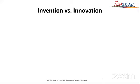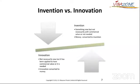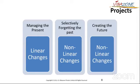Before we can really get into innovation, we need to understand the difference between invention and innovation. Invention is something new, but not necessarily with commercial value or a market need — it converts money to invention. That organization had plenty of inventions but didn't have too many innovations. Innovation is not necessarily new, but it has been applied to have commercial value or a need, and innovation generally converts to money. Projects should be managed differently from innovation — managing the present with linear changes, selectively forgetting the past with non-linear changes, and creating the future. This is how innovation works.